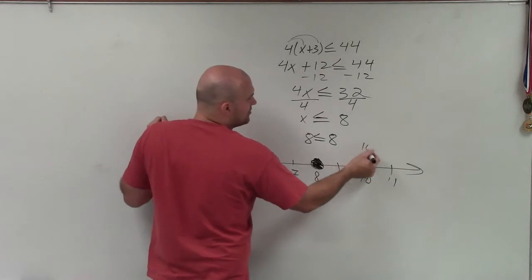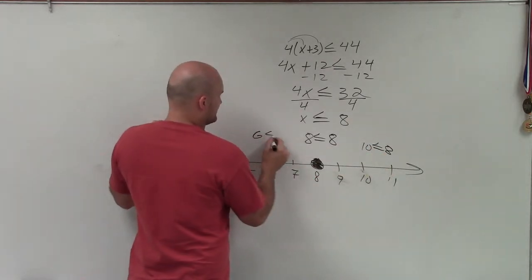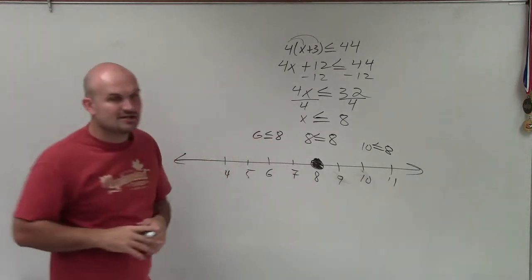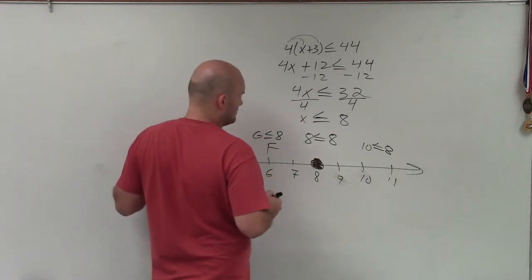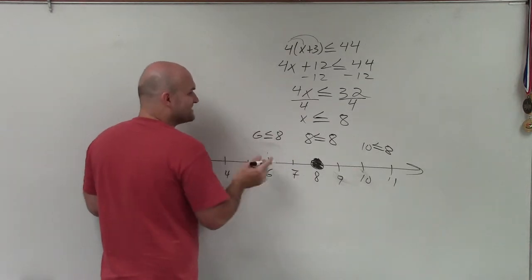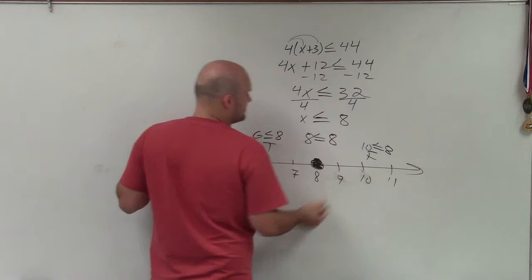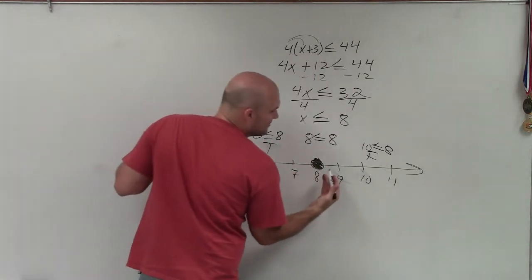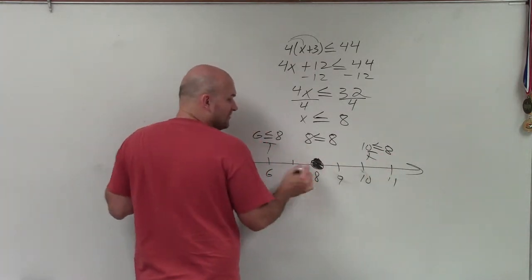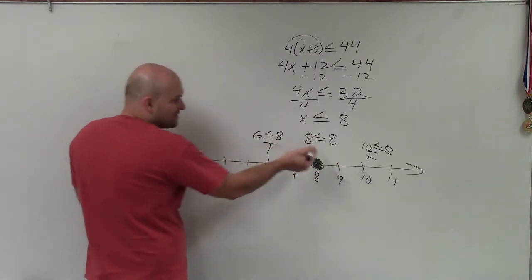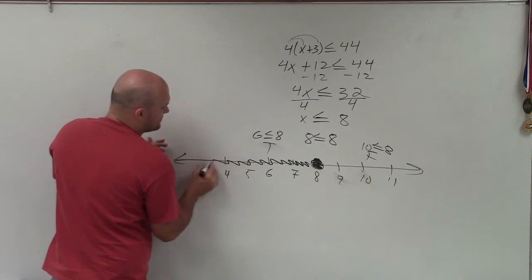Then just pick two other points to test. Let's choose 10 and let's choose 6. Is 6 less than or equal to 8? Yes, that's true. Is 10 less than or equal to 8? No, that's false. So therefore, any number we test to the right of this value is also going to be false. Any number we test to the left, because they're all less than 8, is going to be true.